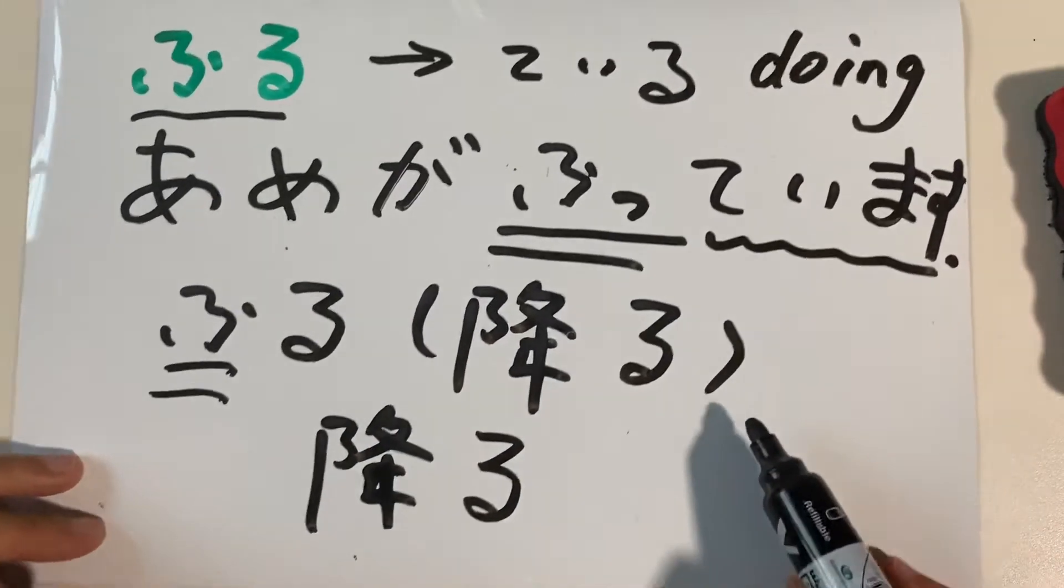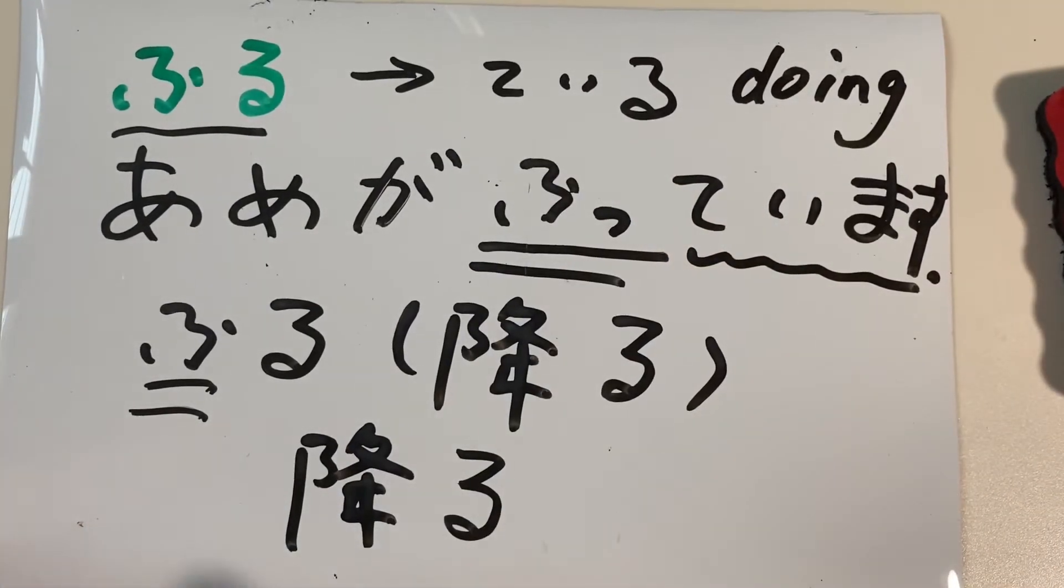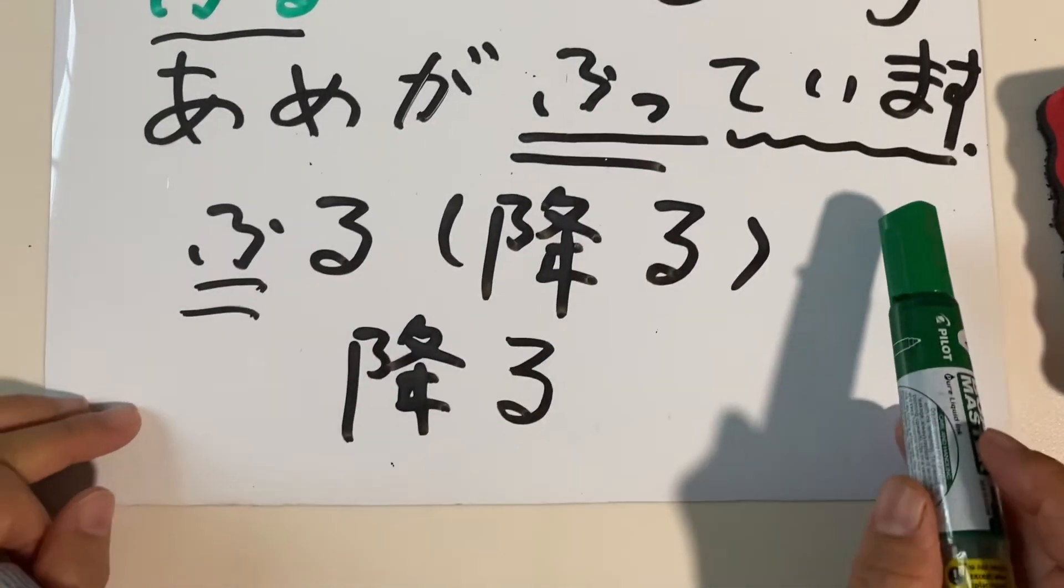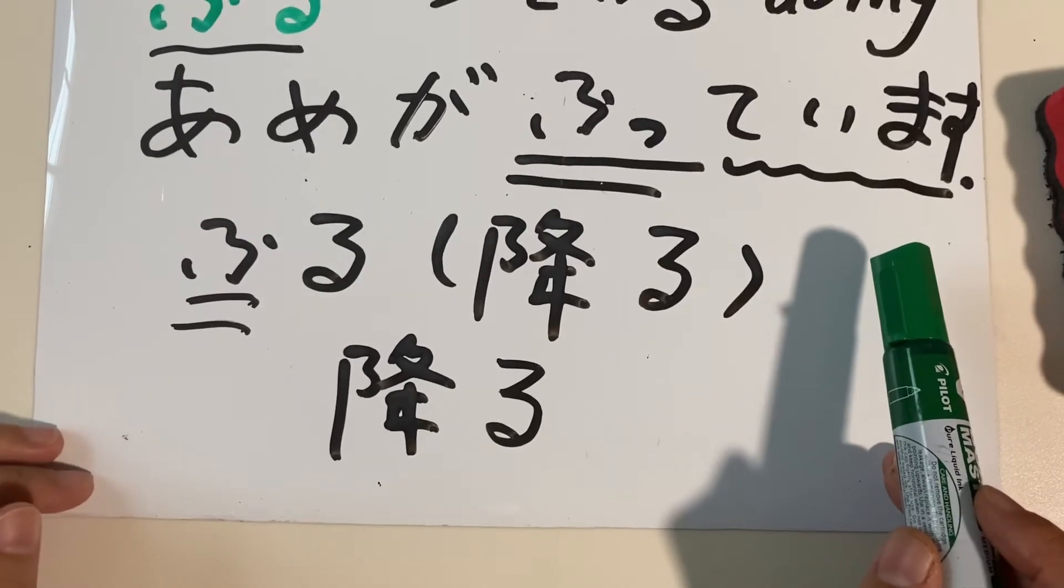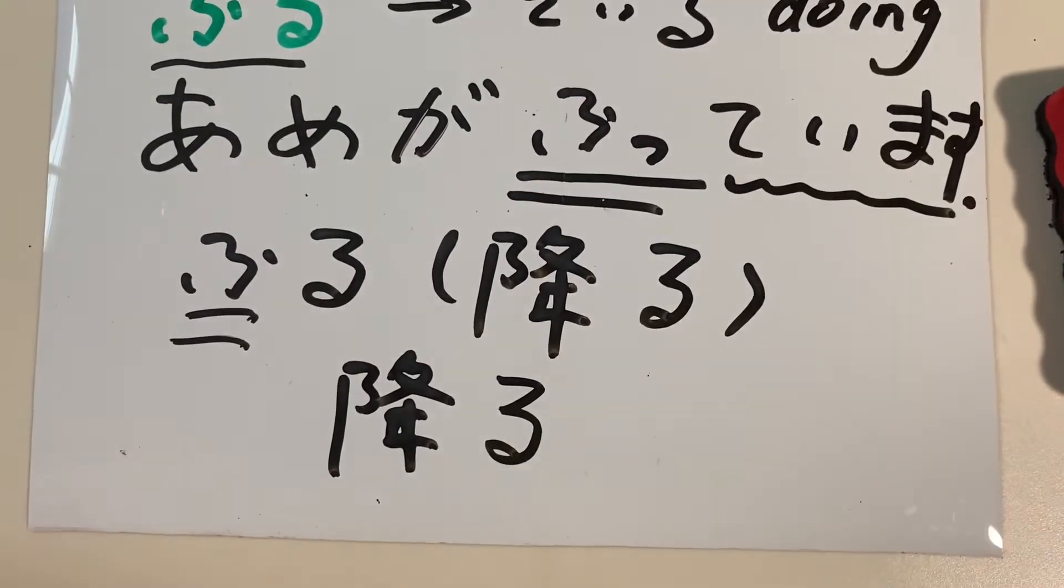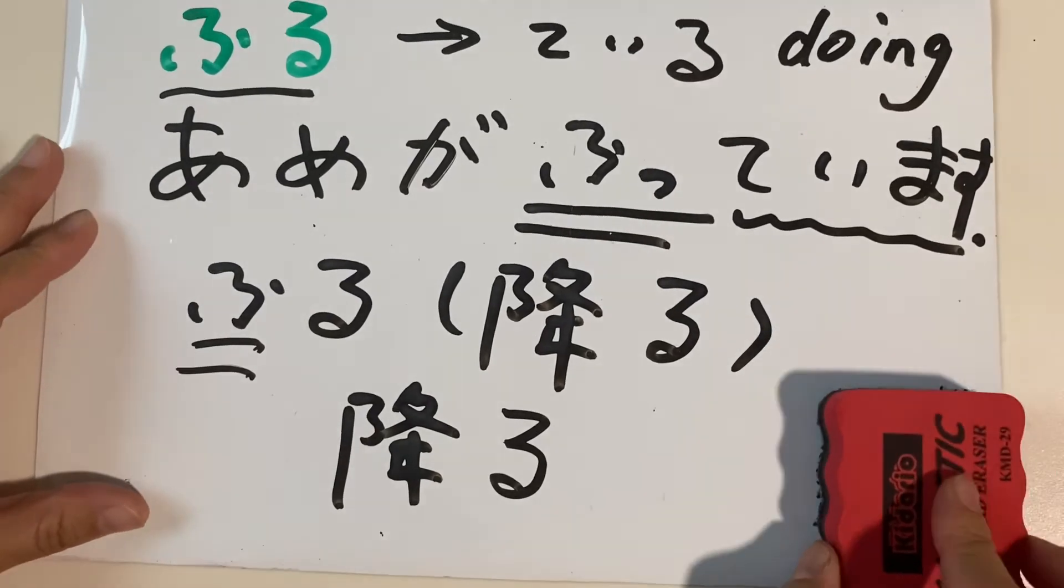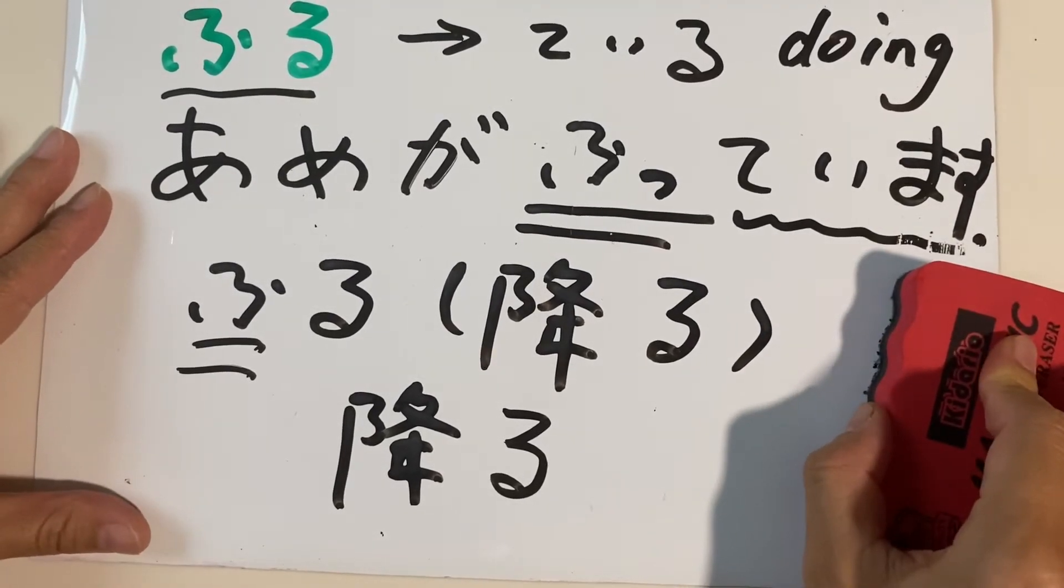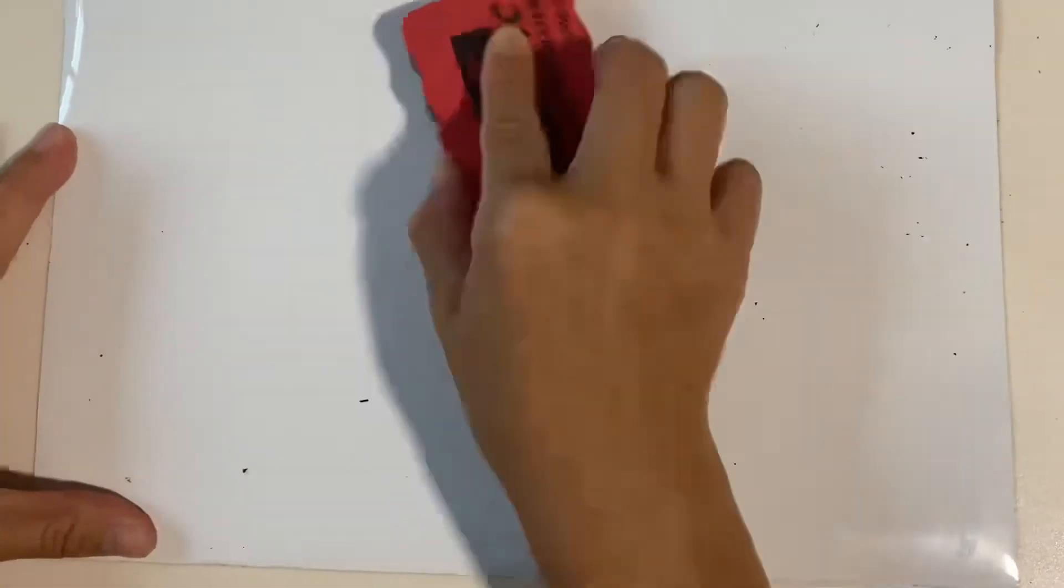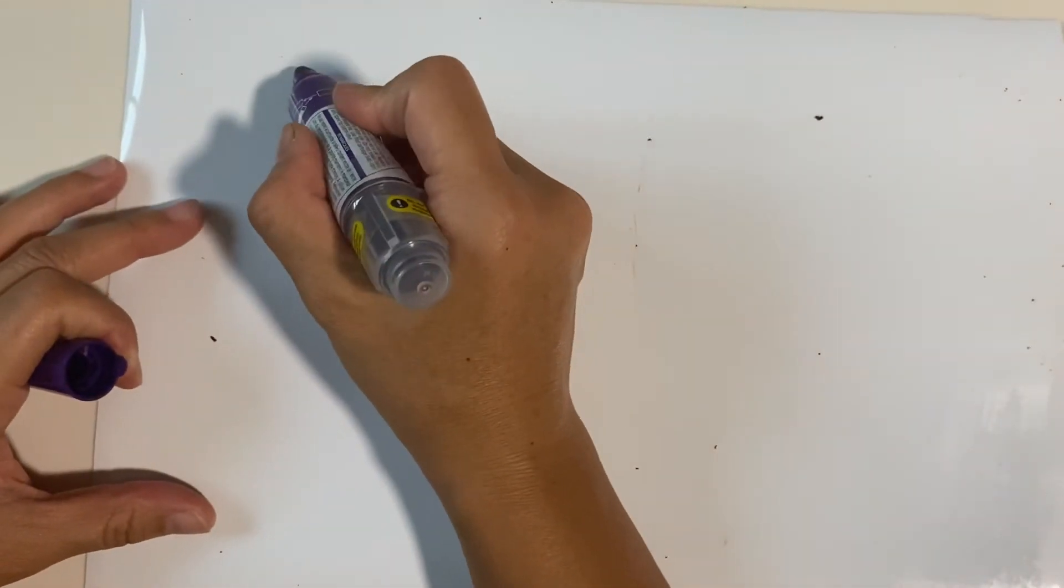Furu change to te iru. Plus te iru, te iru means doing. Futte imasu. Ame ga futte imasu. It's raining. Yeah, it's raining. Alright, okay. And just now we had aki. This one I will erase. Aki. Just now I introduced aki, autumn. Minasan, aki ga suki desu ka? Aki. So another word I would like to share.